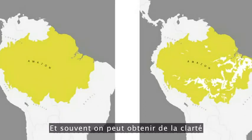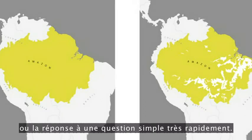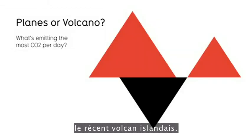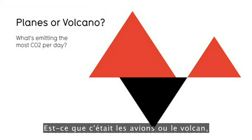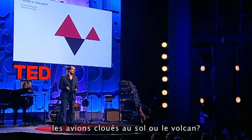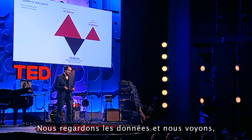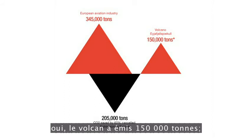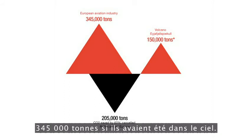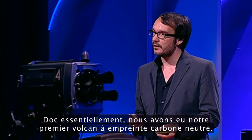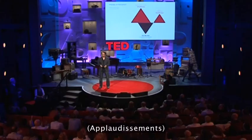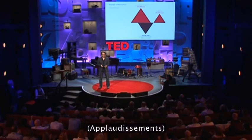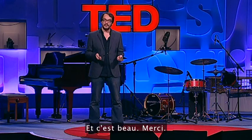And often we can get clarity or the answer to a simple question very quickly, like this one. The recent Icelandic volcano — which was emitting the most CO2, the grounded planes or the volcano? We look at the data and we see the volcano emitted 150,000 tons. The grounded planes would have emitted 345,000 if they were in the sky. So essentially, we had our first carbon-neutral volcano. And that is beautiful. Thank you.